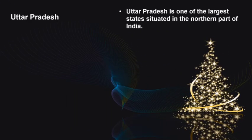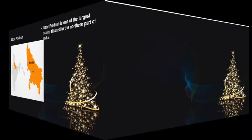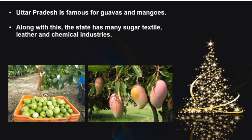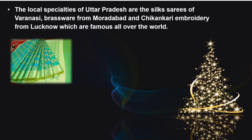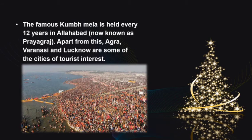Uttar Pradesh is one of the largest states in the northern part of India. 70–80% of sugarcane production in India comes from Uttar Pradesh. The state is also famous for guavas and mangoes, and has many sugar, textile, leather and chemical industries. Local specialities include the silk sarees of Varanasi, brassware from Moradabad, and chikankari embroidery from Lucknow, which are famous all over the world. The famous Kumbh Mela is held every 12 years in Allahabad, now known as Prayagraj, and Agra, Varanasi and Lucknow are cities of tourist interest.